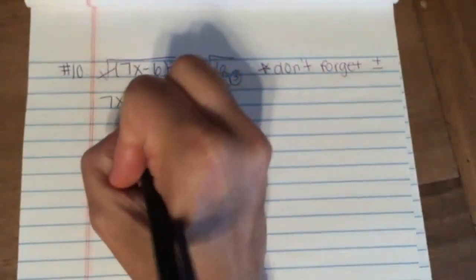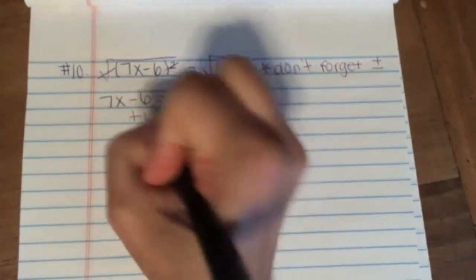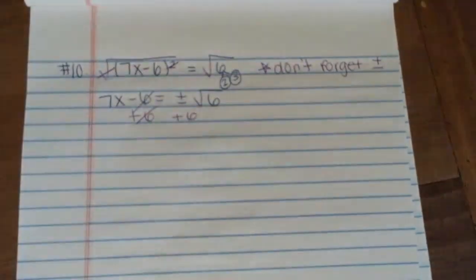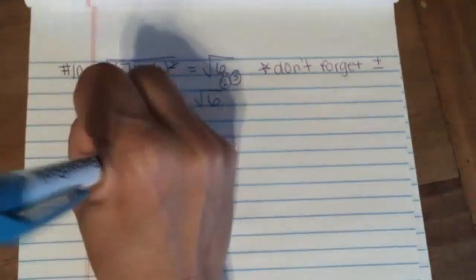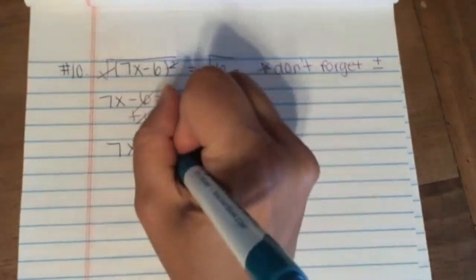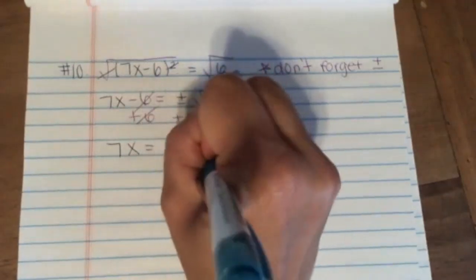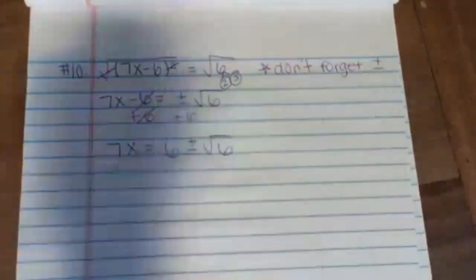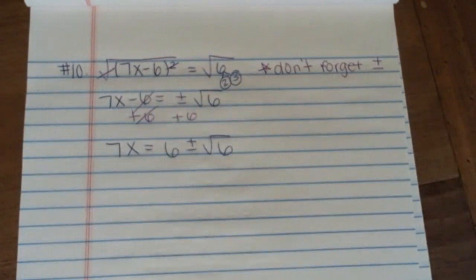Getting x by itself, let's move that negative 6 to the other side, so let's add 6 to both sides, so that way negative 6 plus 6 cancels out. We're left over with 7x equals 6 plus or minus the square root of 6. Those are not like terms, so I cannot combine it, so just leave it.